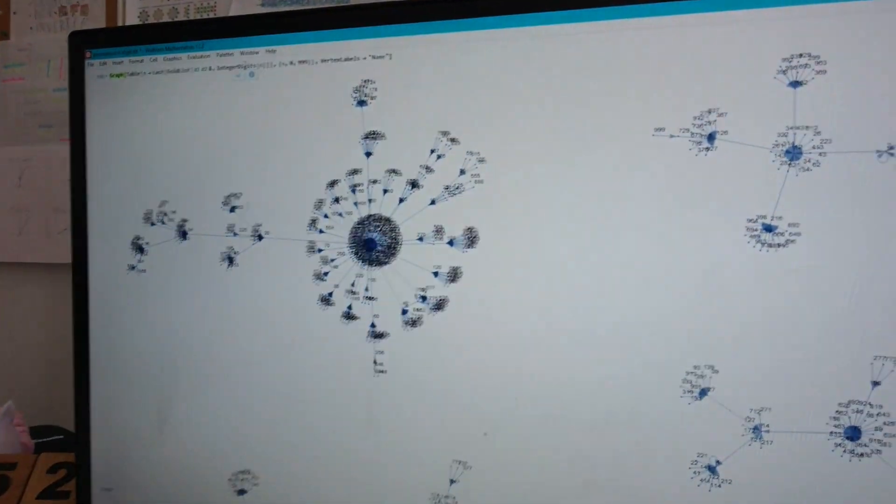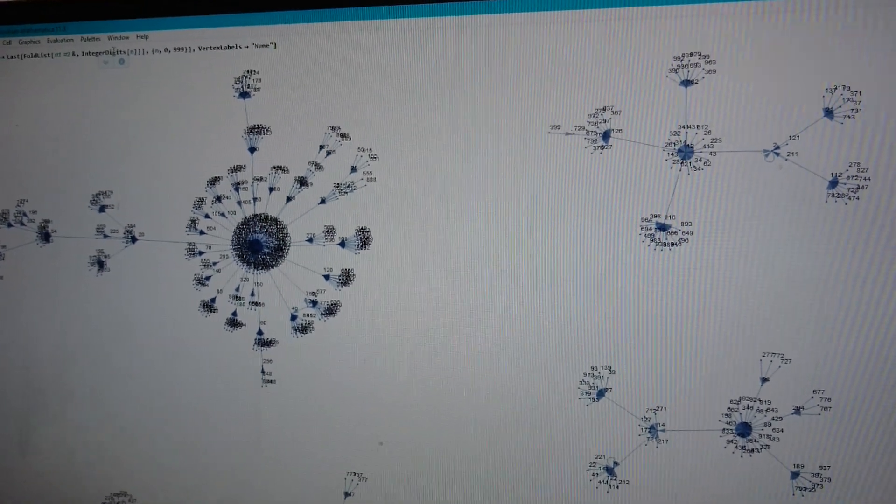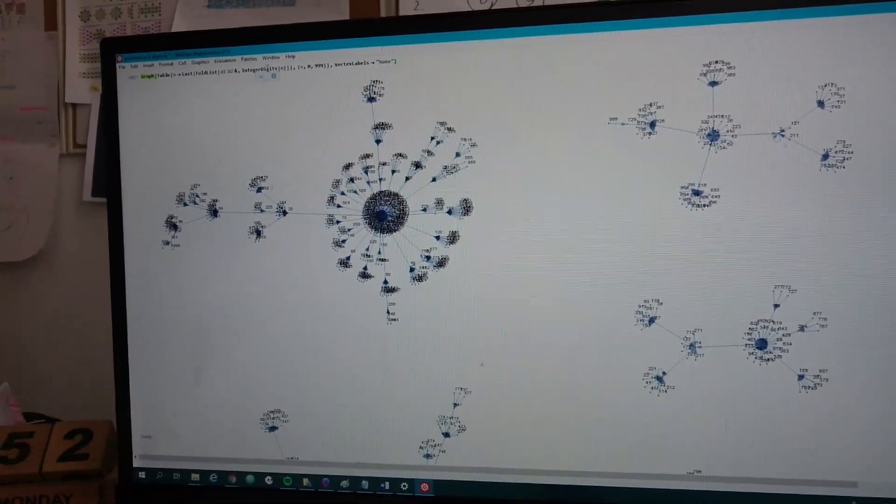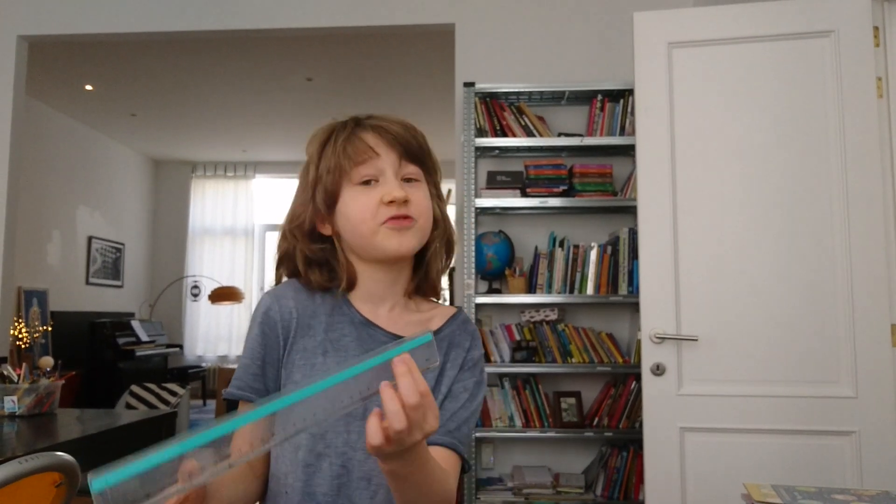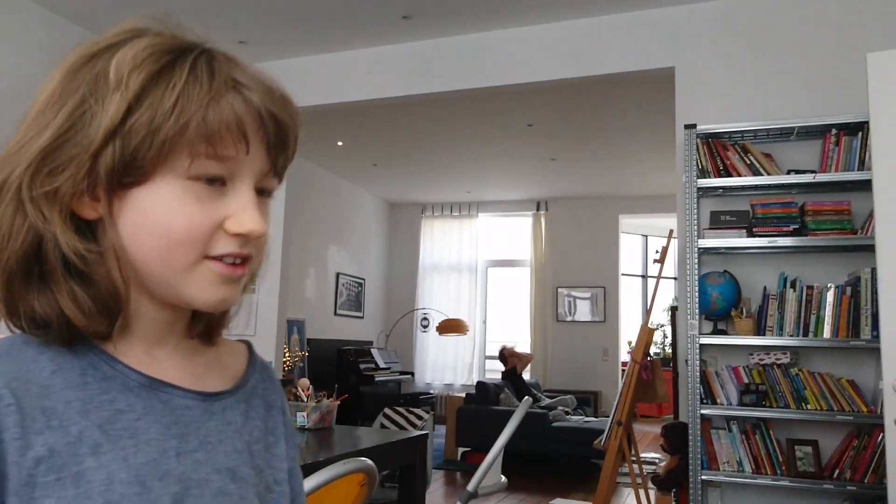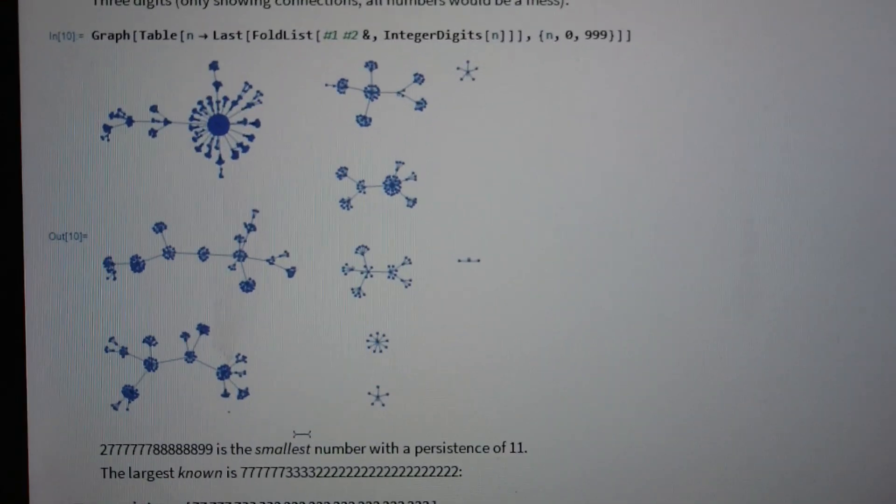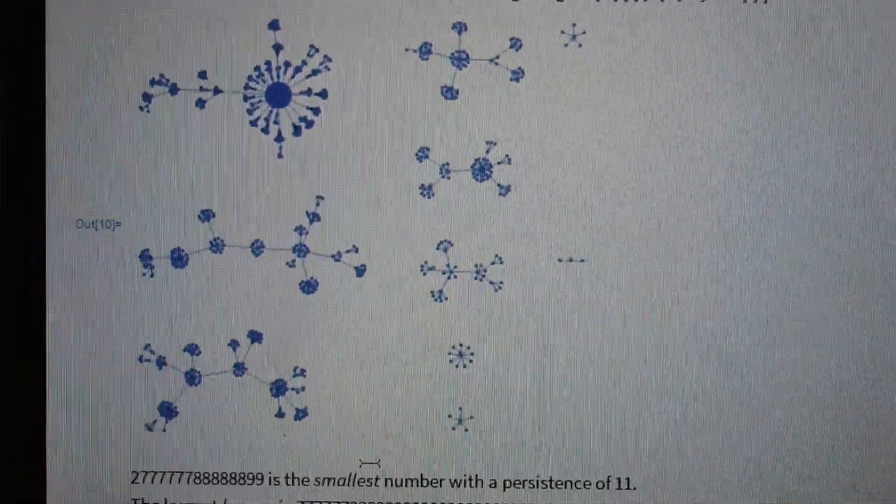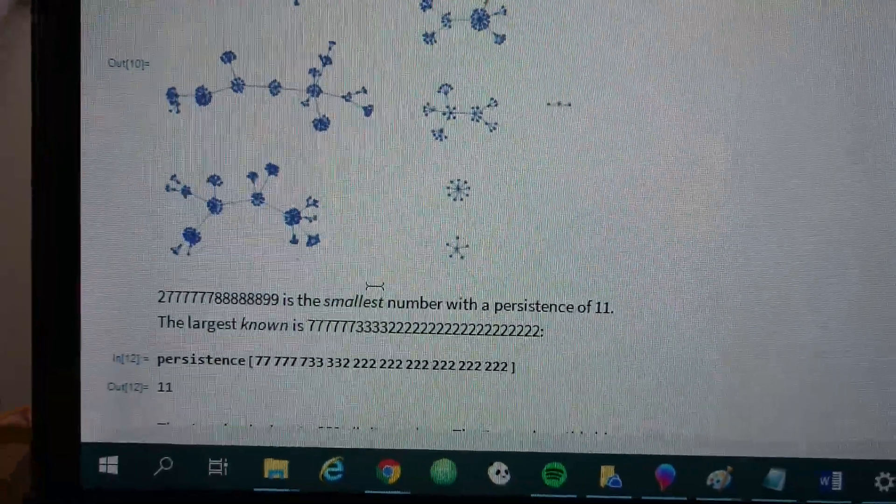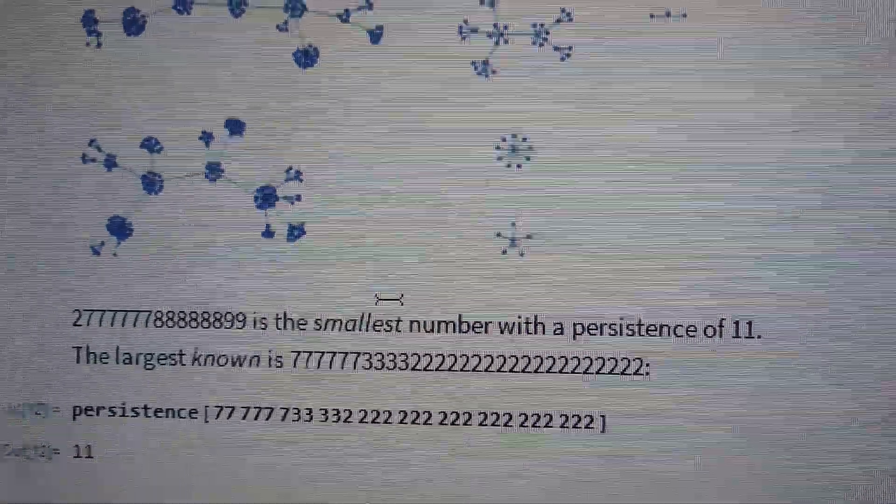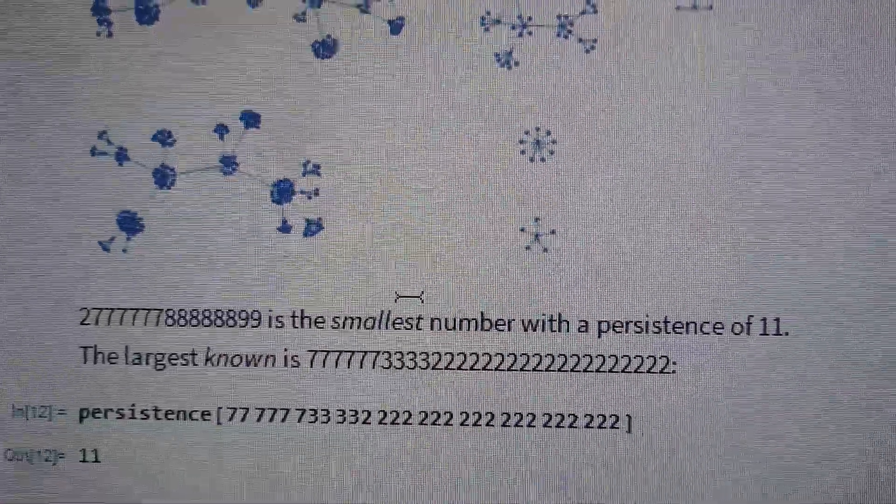Let's go back to the challenge. It's a number of persistence 4. Which is quite surprising since in Numberphile she had to pick a number which is 999,999, which has a persistence of 3. So this one has a bigger persistence than a longer number with more digits. 277 trillion, 777 billion, 788 million, 888,899 is the smallest number with a persistence of 11.